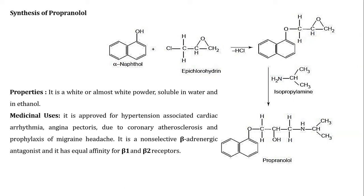Properties of propranolol: it is a white or almost white powder, soluble in water and ethanol. Medicinal uses: it is used in the treatment of hypertension associated with cardiac arrhythmia, angina pectoris due to coronary atherosclerosis, and prophylaxis of migraine headache. It is a non-selective beta adrenergic antagonist with equal affinity for beta-1 and beta-2 receptors.